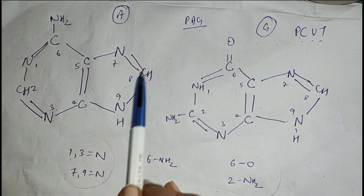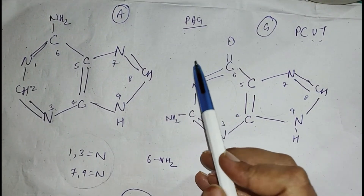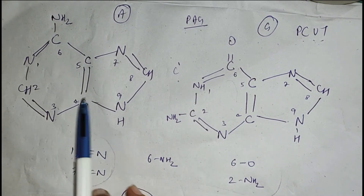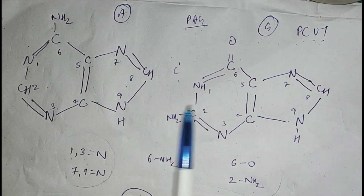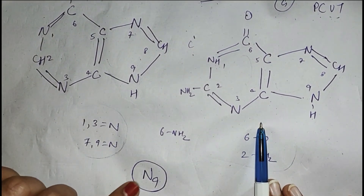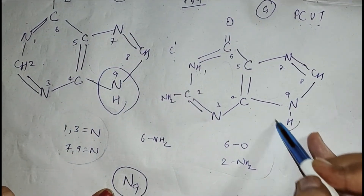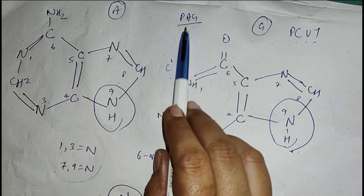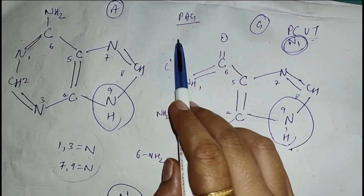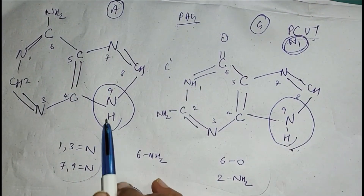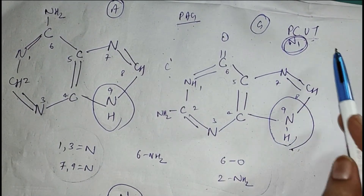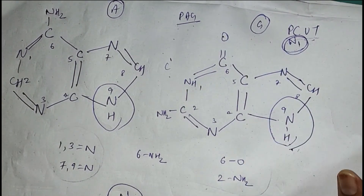In case of purines, when they attach with sugar, carbon number 1 prime of sugar is involved in the glycosidic bond. For these nitrogenous bases, in case of adenine and guanine, N9 is involved in the formation of the glycosidic bond. In case of pyrimidines, N1 is involved. So in purines — small word, small members, double ring — their higher-numbered nitrogen atom is involved. In pyrimidines — bigger word, more members, single ring — their lower-numbered nitrogen is involved in the glycosidic bond.